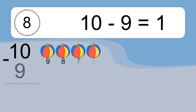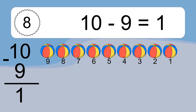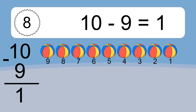10 minus 9 equals what? 10 minus 9 equals 1. Let's count it: 9, 8, 7, 6, 5, 4, 3, 2, 1.